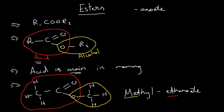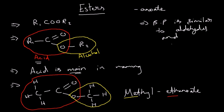The boiling point of esters is similar to aldehydes and ketones — all esters have a higher boiling point than their corresponding alkanes. An example of an ester would be a triglyceride, which those who study biology would know is a lipid or a fat.